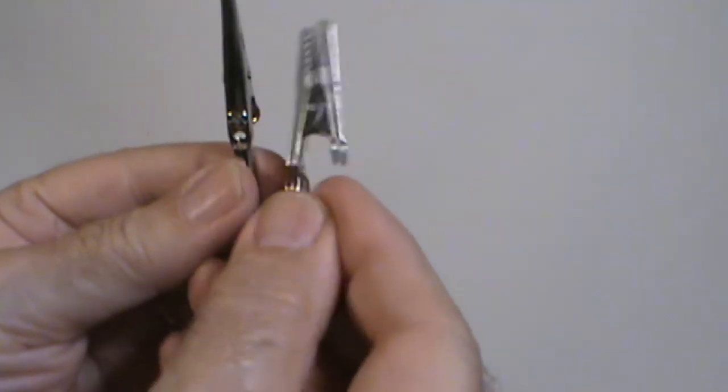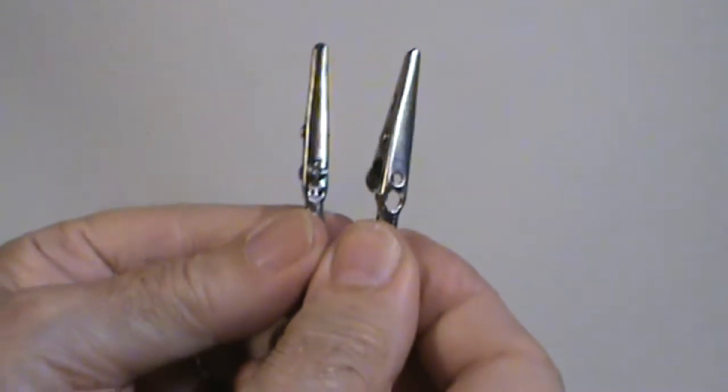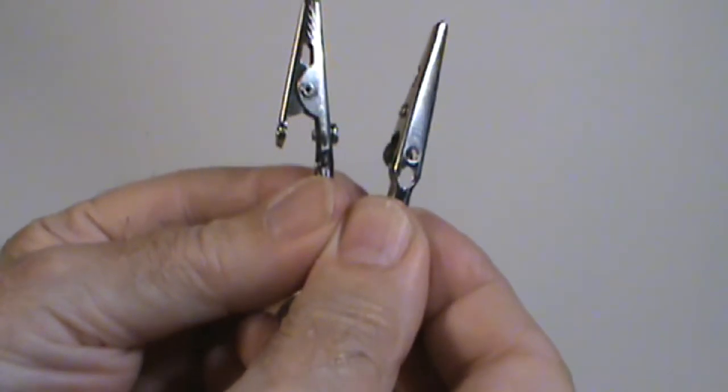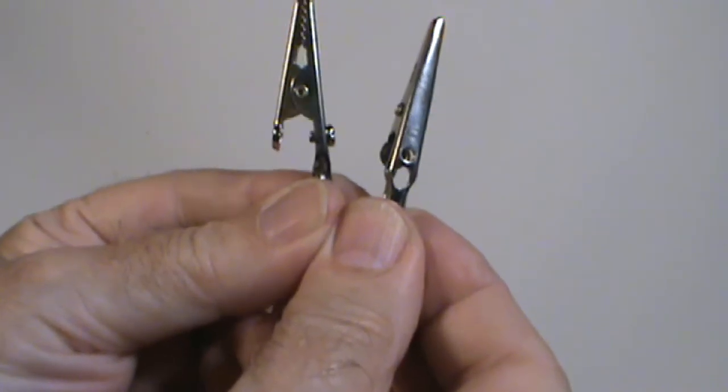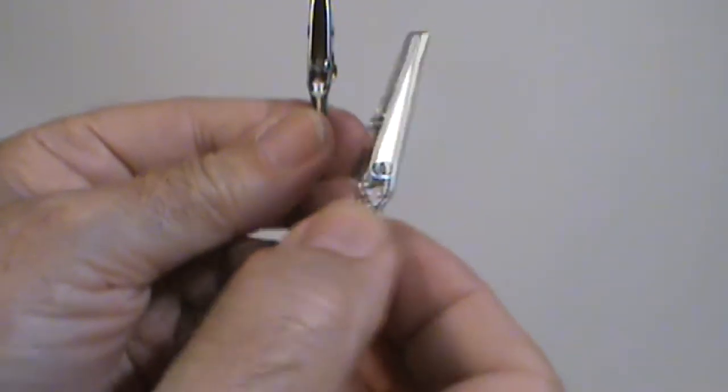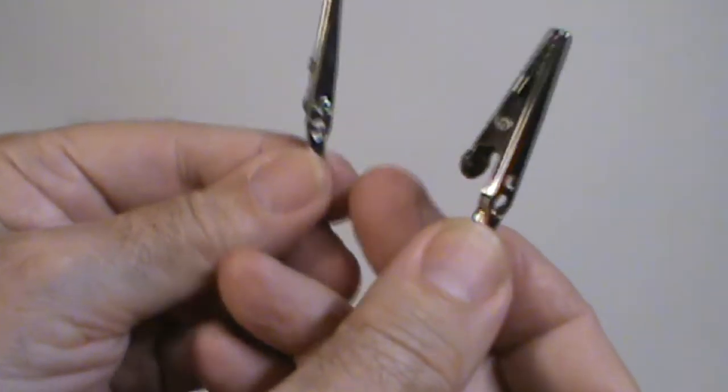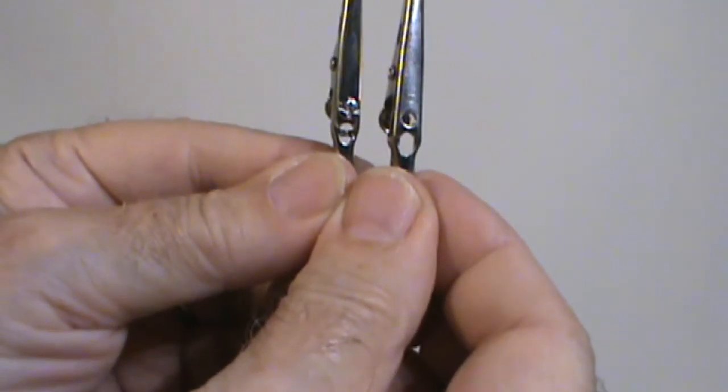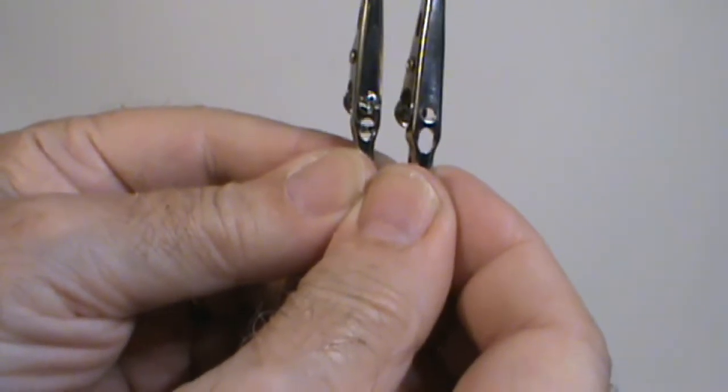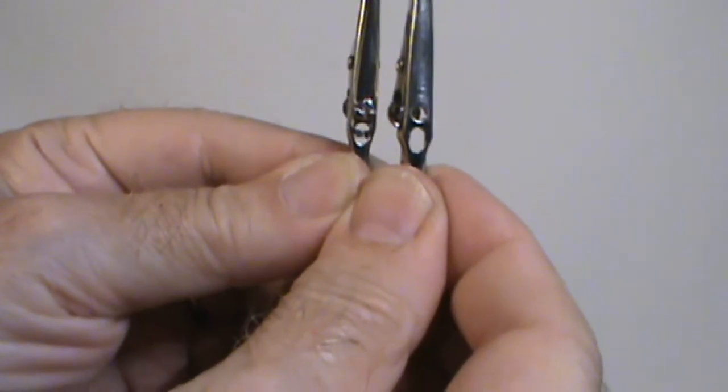Take two of your alligator clips and remove the screw from the bottom of them. In this area here you'll want to drill out a hole the size of the screw that you're going to be using to install this on the tool.